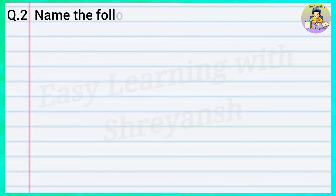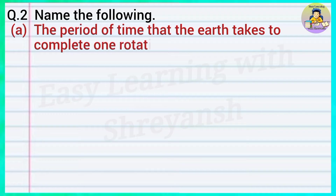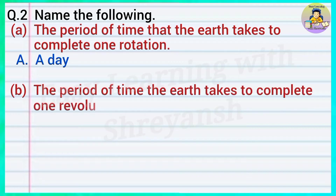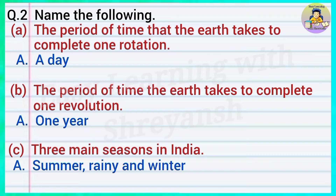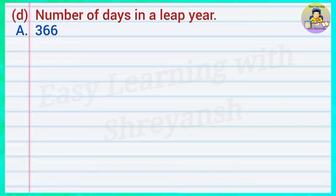Question number two, name the following: A — the period of time that the earth takes to complete one rotation — answer: a day. B — the period of time the earth takes to complete one revolution — answer: one year. C — three main seasons in India — answer: summer, rainy, and winter. D — number of days in a leap year — answer: 366.